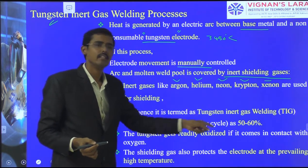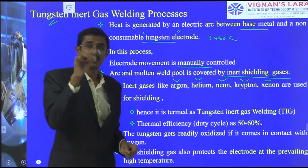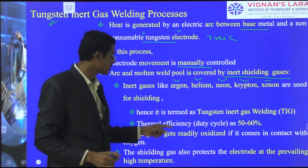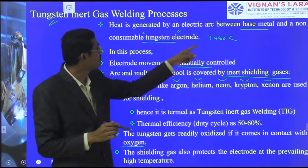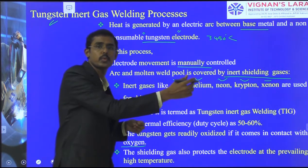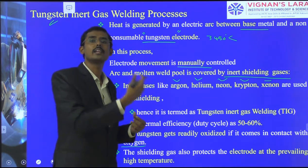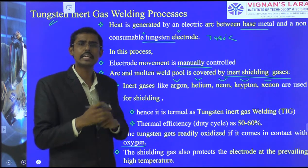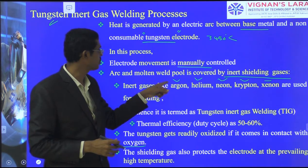The thermal efficiency of TIG is 60%, lower than SAW (80–90%) and MIG because TIG is a manual process with a non-continuous electrode. Tungsten readily oxidizes if it comes in contact with oxygen at high temperatures, causing contamination of the non-consumable electrode. Therefore, strong shielding gas is provided to protect both the electrode and base material such as aluminium from atmospheric contamination. Argon or helium is used as the inert shielding gas.